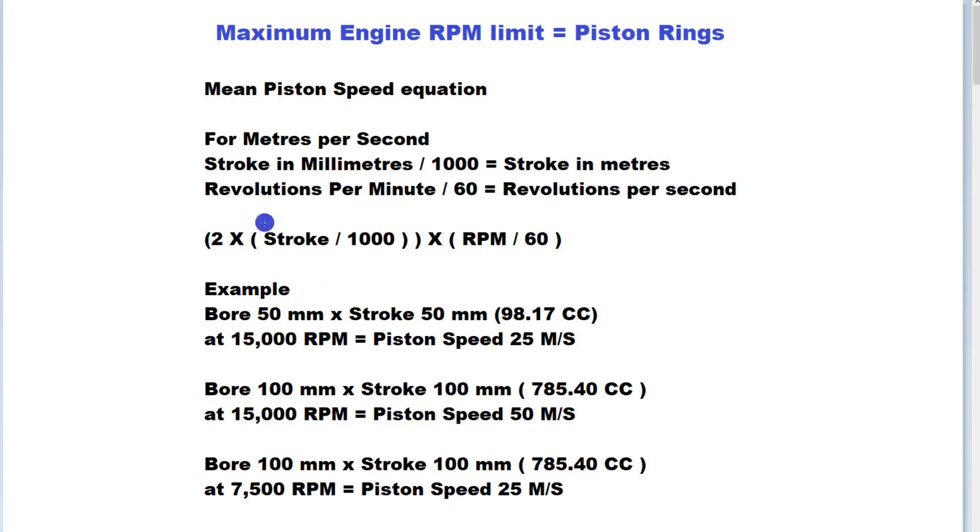You can immediately see here that a smaller engine of 100 CC with a 50 millimeter stroke and 50 millimeter bore, that is a square stroke and bore, at 15,000 RPM will have a mean piston speed of 25 meters per second.